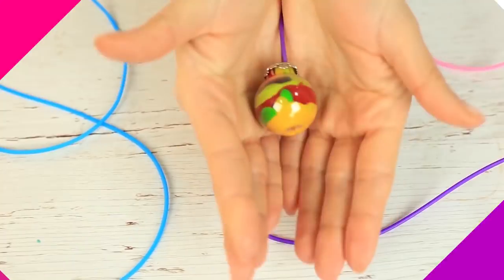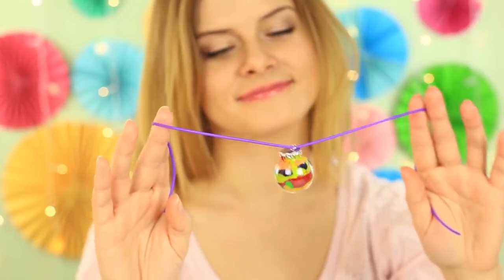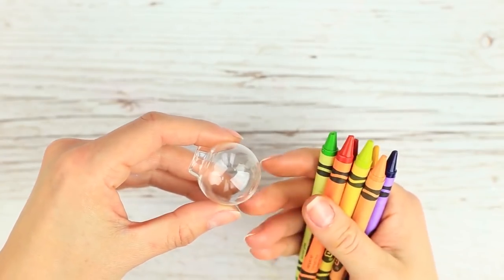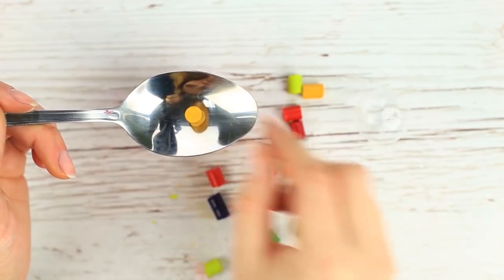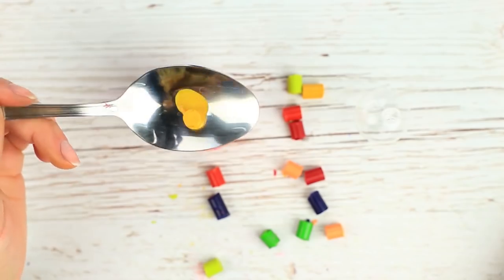Let's paint the jar in an original way. We'll melt wax. So we broke the wax crayons into pieces. Lit a candle and took a tablespoon. Put a yellow piece in the spoon and heat.